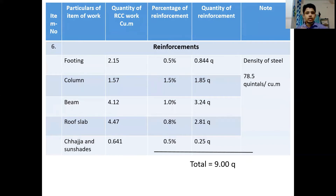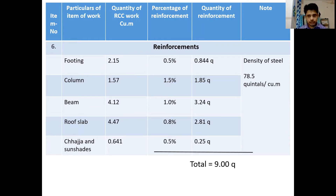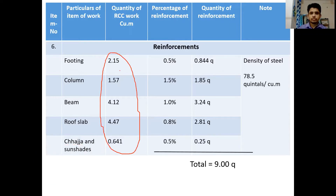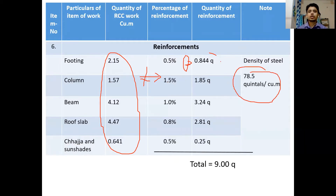Continuing with our numerical on a framed RCC building, the next step is reinforcement calculation. The percentages of reinforcement are given as part of the work. From there we find the volume of reinforcement, and multiplying by the density of steel we find the weight of reinforcement in quintals. For footings, columns, beams, and roof slab, the percentage of reinforcement is given; we multiply the volume of work by that percentage to get the volume of reinforcement, then multiply by density to get quintals.